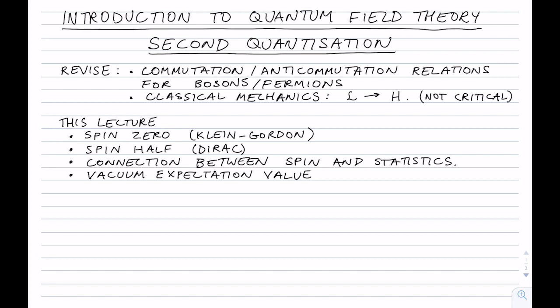If you want to revise something before you start this video, you might want to have a look at the commutation and anticommutation relationships for bosons and fermions respectively — that was covered in the earlier part of the course. And optionally, you can revisit classical mechanics and how we go from the Lagrangian formulation to the Hamiltonian formulation.